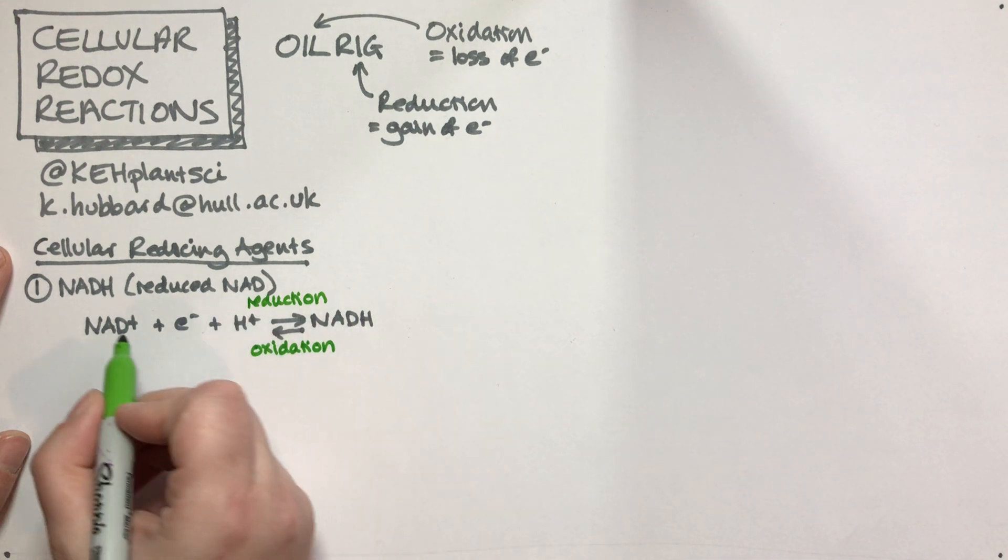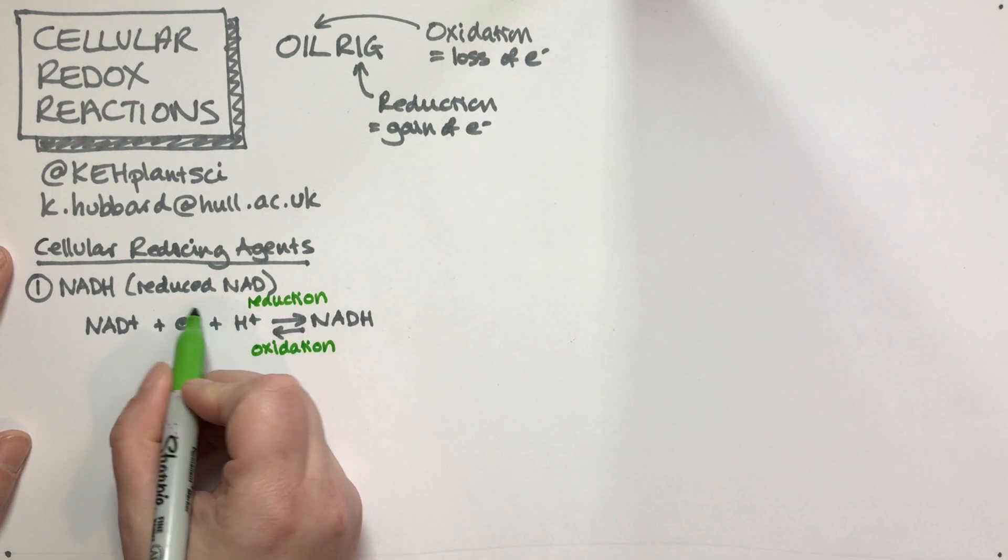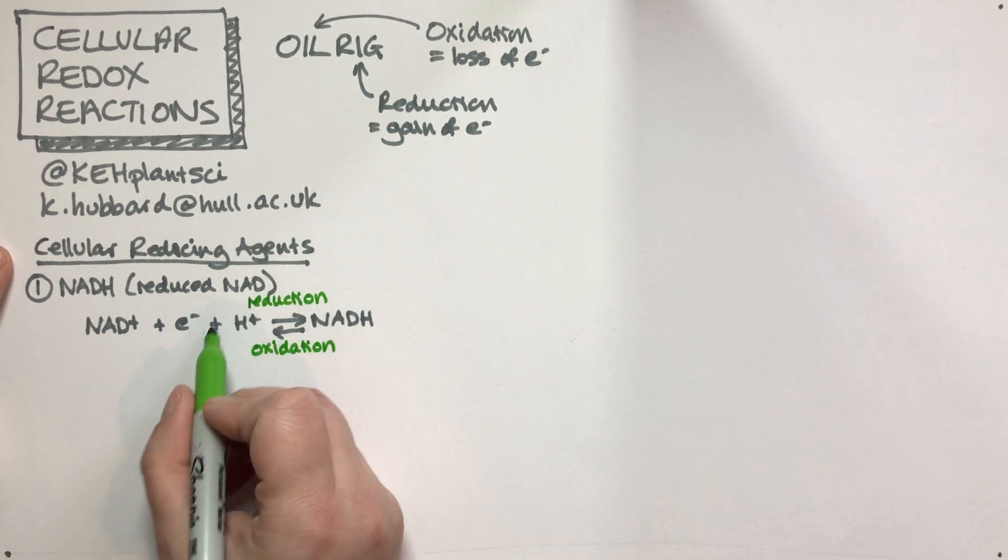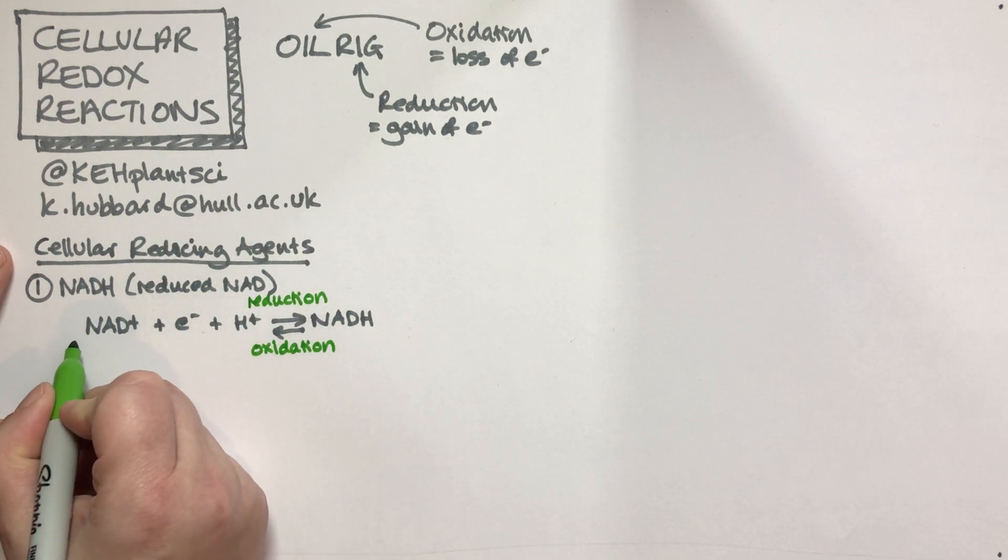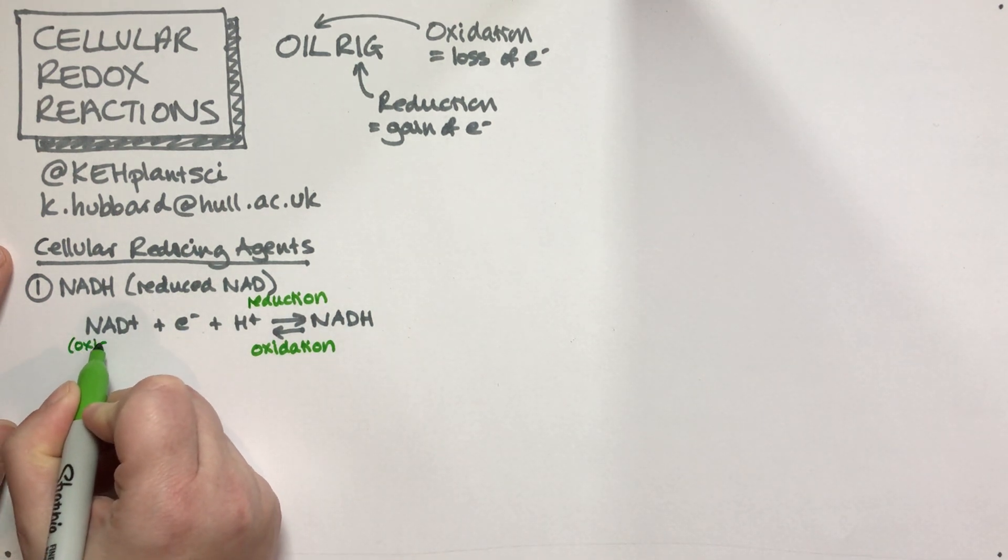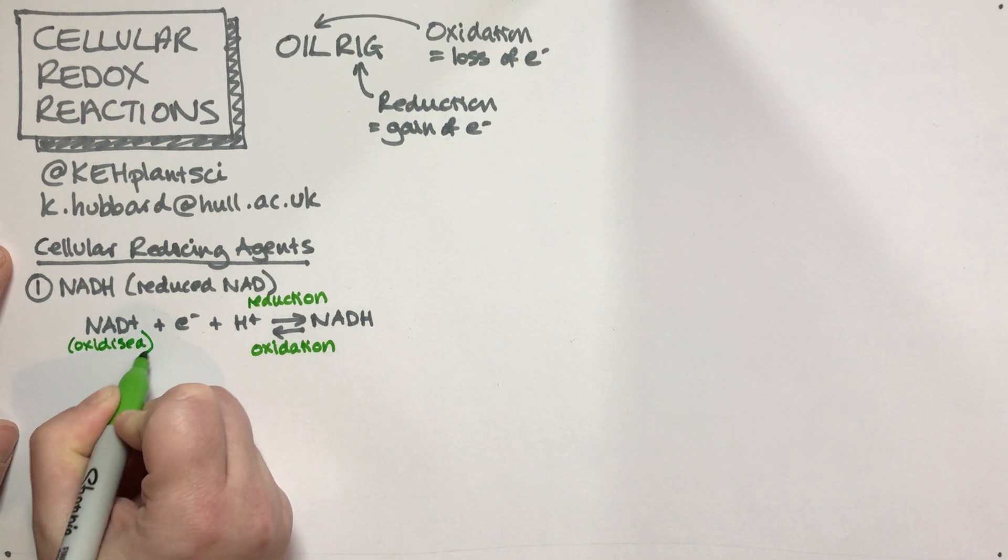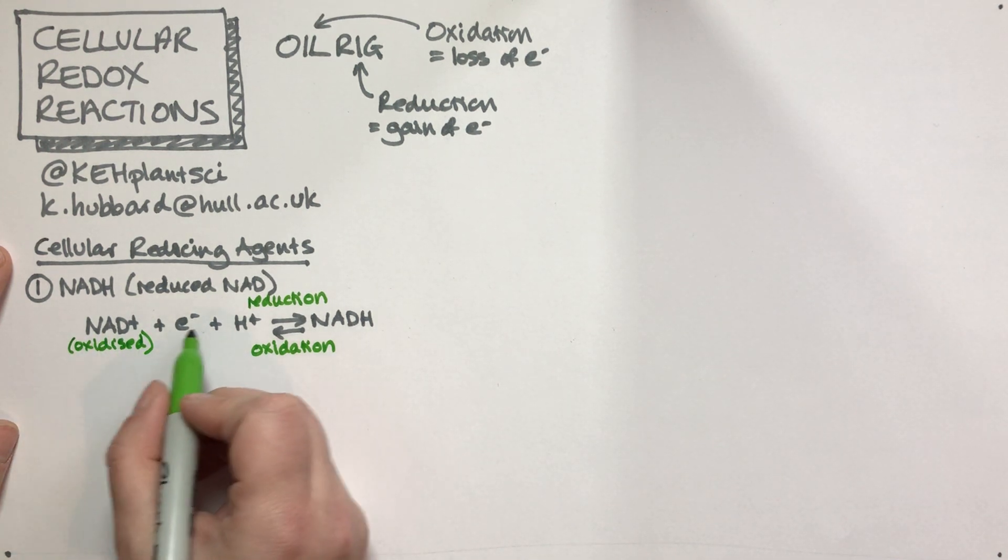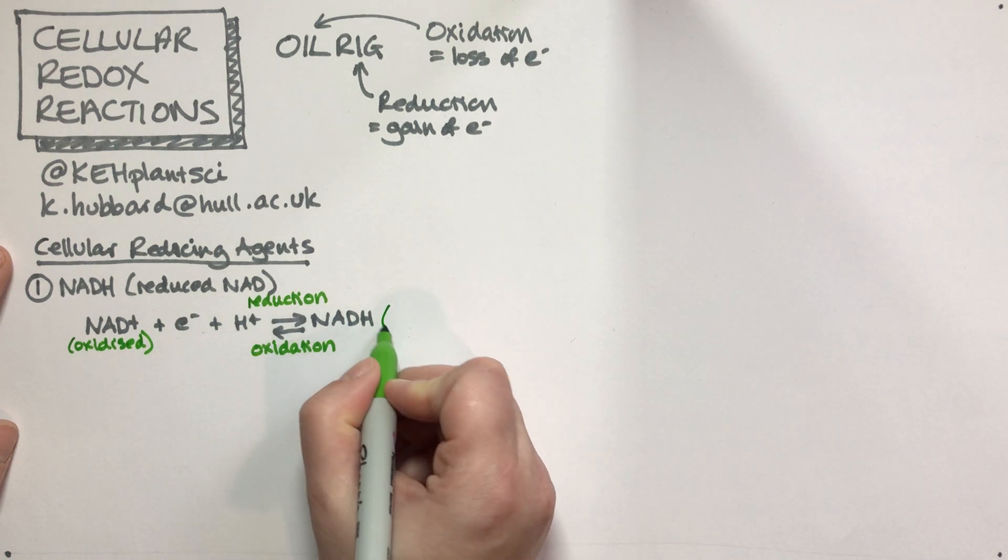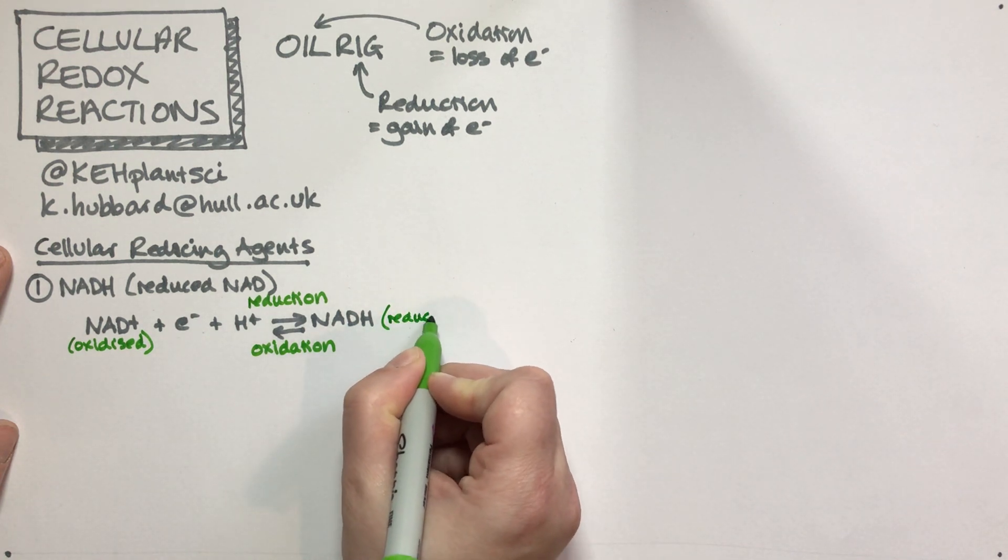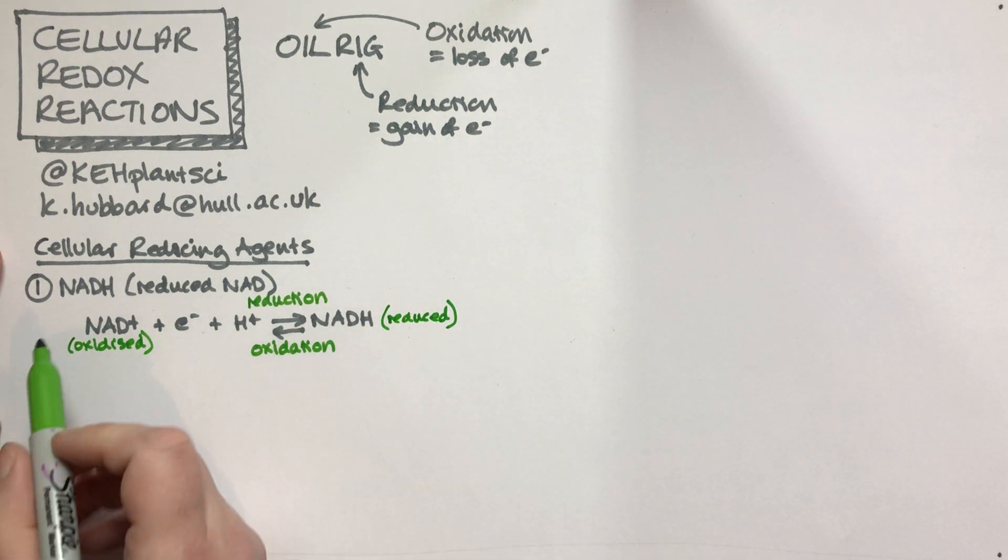The NADH has gained an electron, just from wherever it is in the cell. NAD+ started off oxidized, so it had fewer electrons. It gained an electron through the process of reduction, so it became reduced.